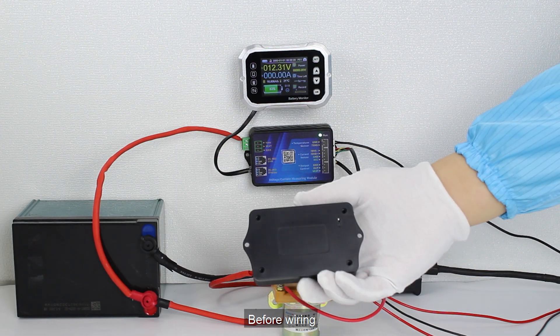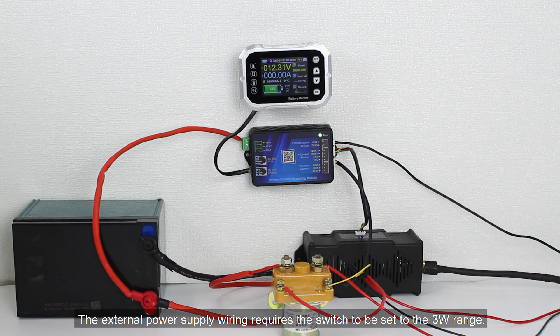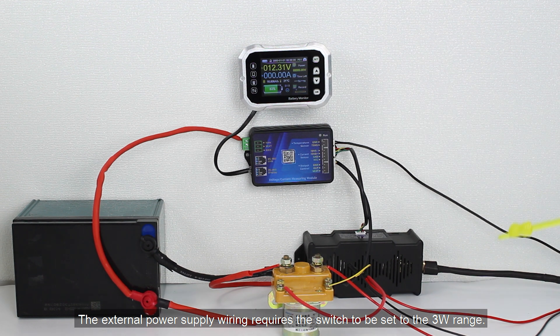Before wiring, please check the range switch on the back of the measurement module. The external power supply wiring requires the switch to be set to the 3W range.